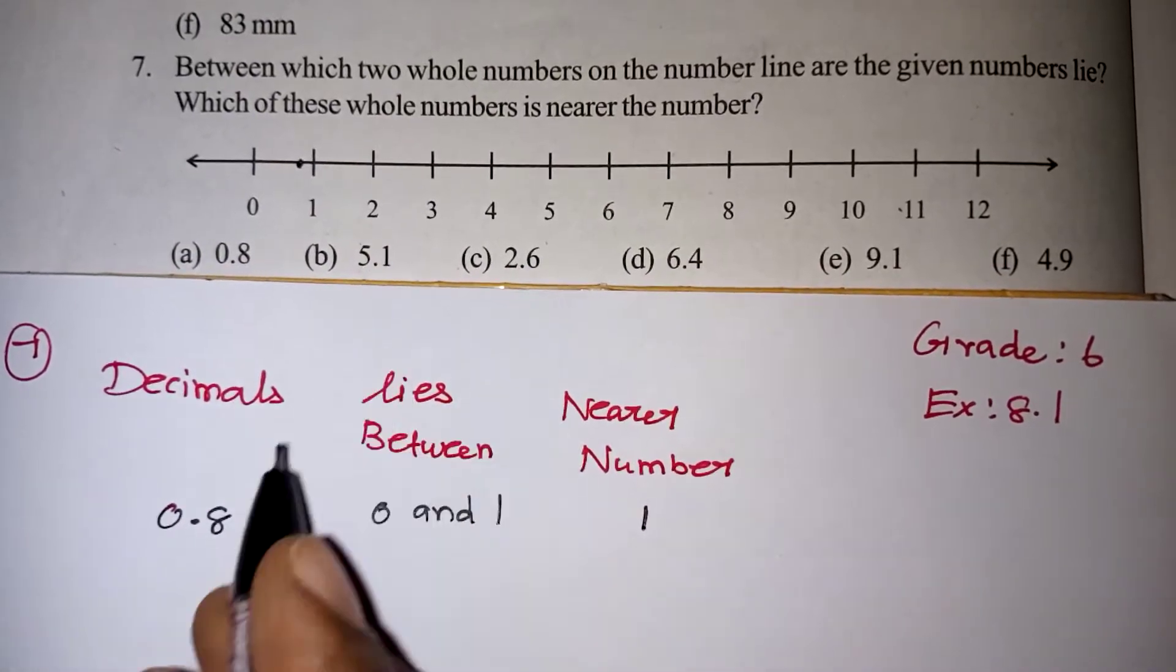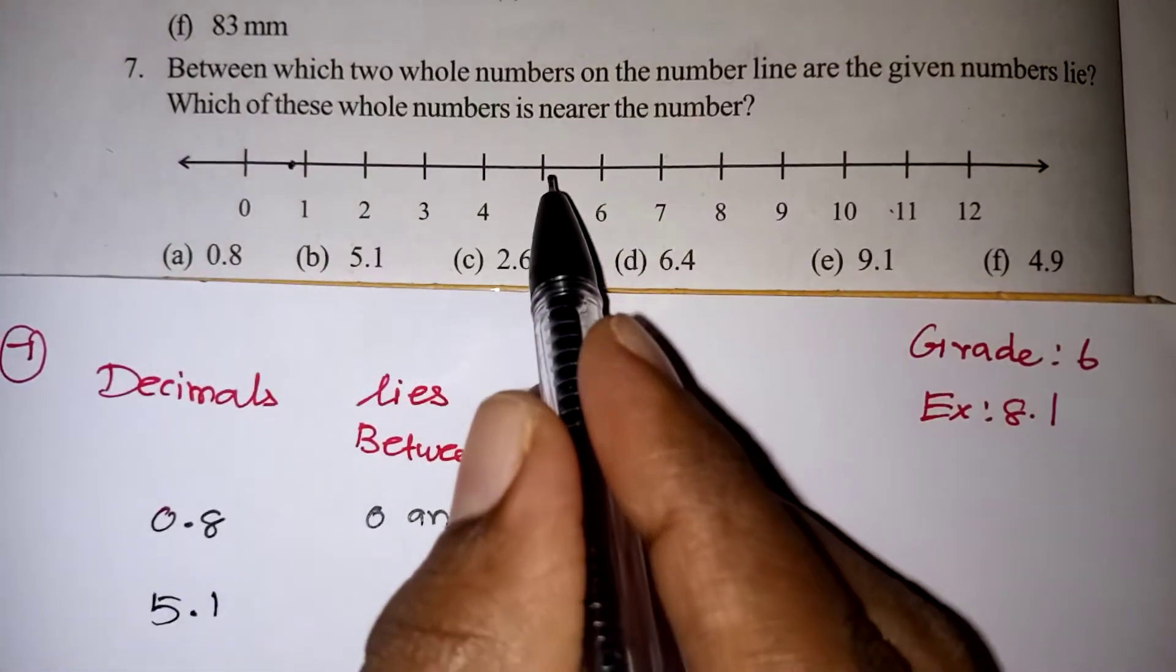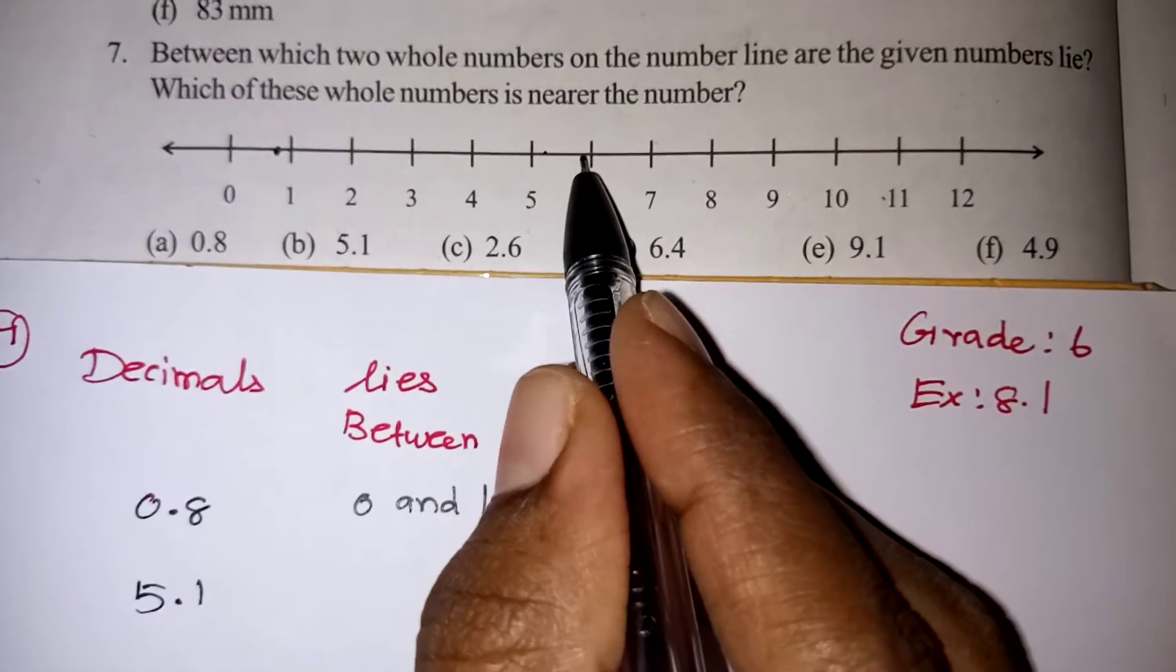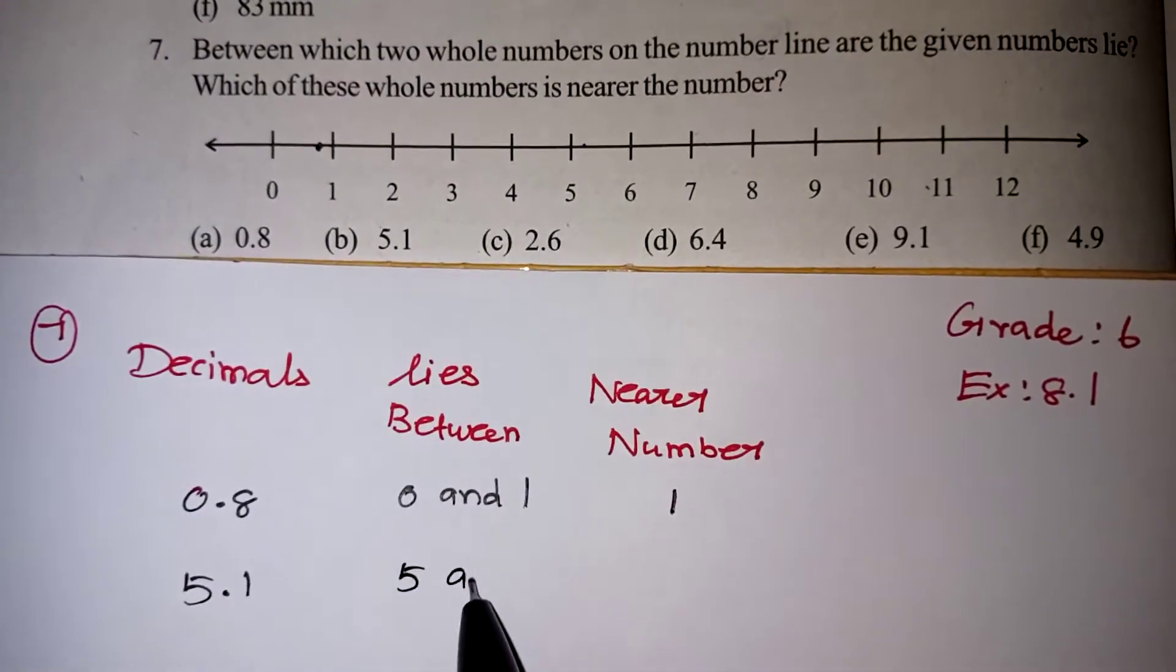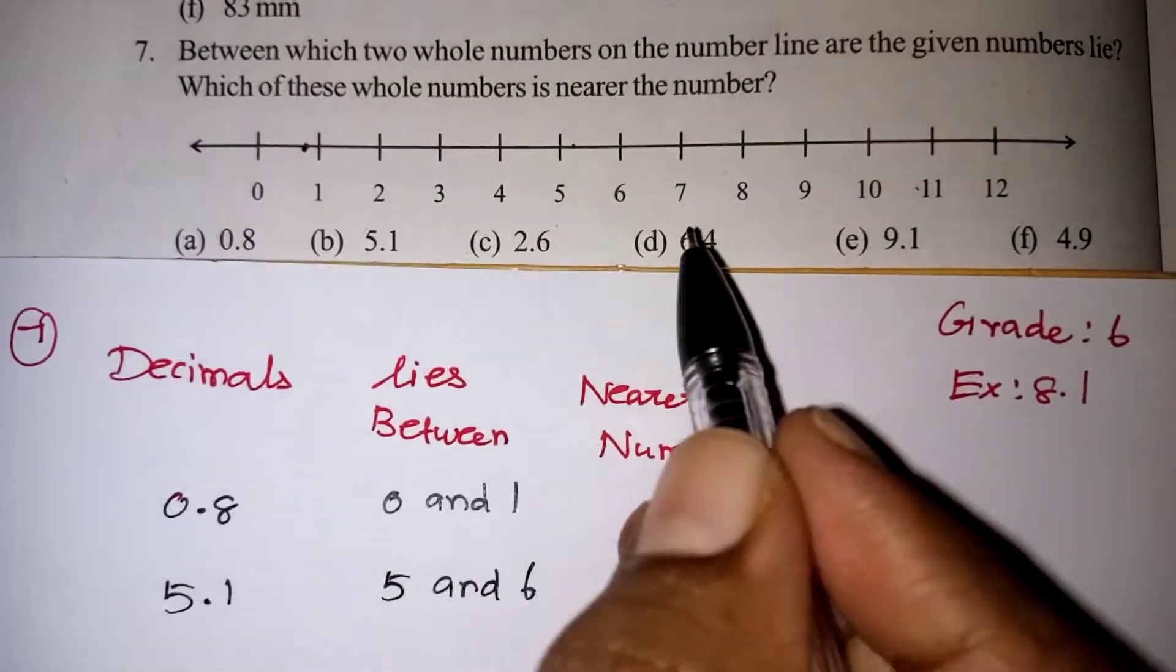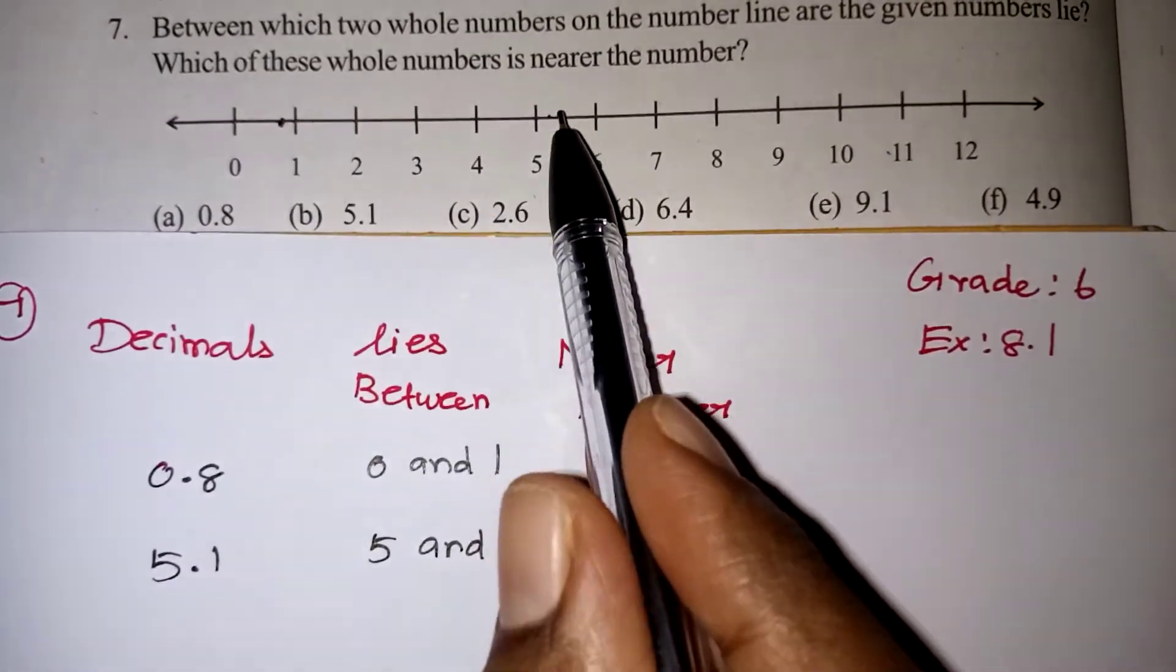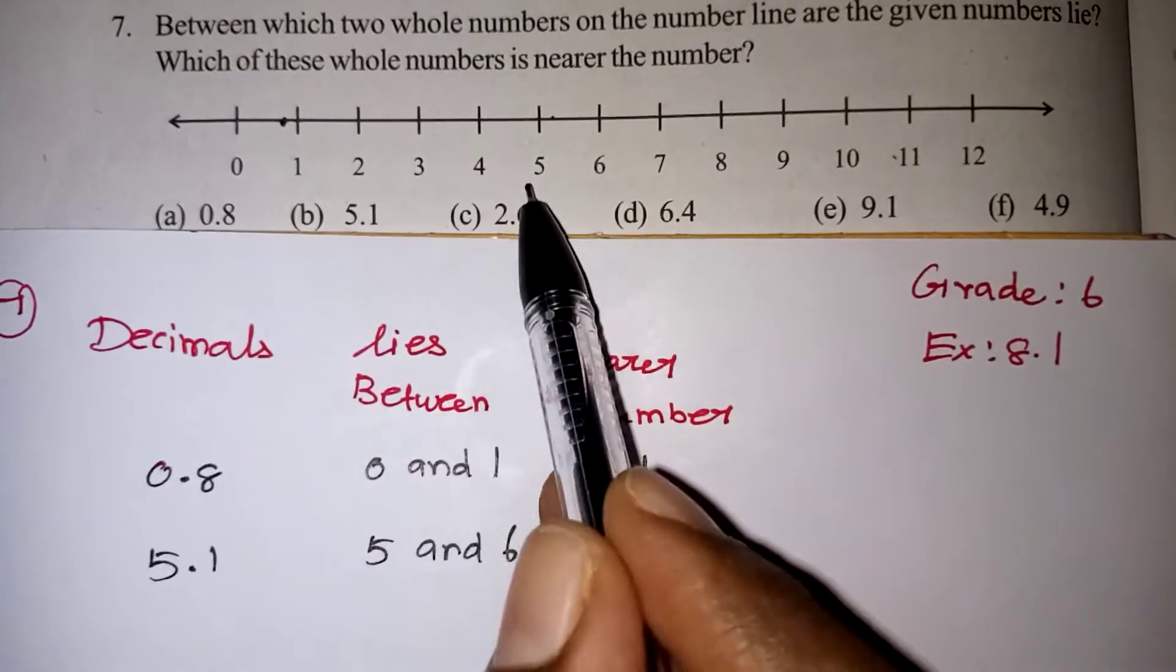Next is 5.1. 5.1 is a number that will come after 5. After 5, 5.1 will come, then 5.2, 5.3, 5.4 and so on. After 5.9, 6 will come. Now, 5.1 comes in between 5 and 6. Which number is it nearest to? 5.1 will come immediately after 5, so it is nearest to 5. Since it is less than 5.5, the middle number, it will be nearest to 5 only.